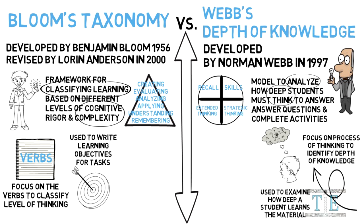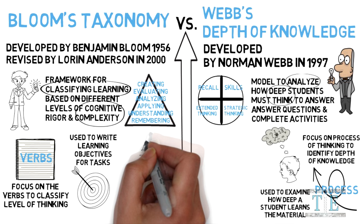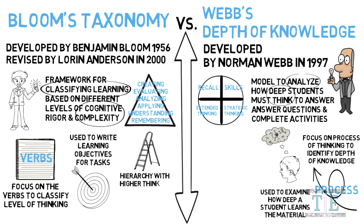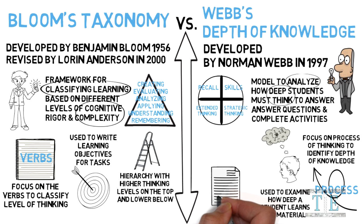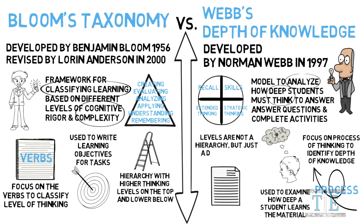Bloom's Taxonomy is leveled with steps — it is a hierarchy with higher thinking levels on top. Webb's Depth of Knowledge is not a hierarchy, but rather a description of different ways students think and the thinking process. To reiterate, Bloom's is a taxonomy and Webb's is more of a description.